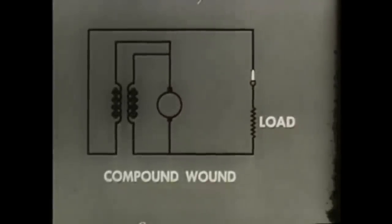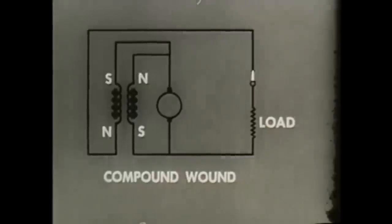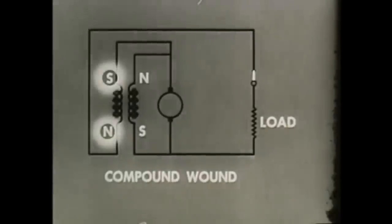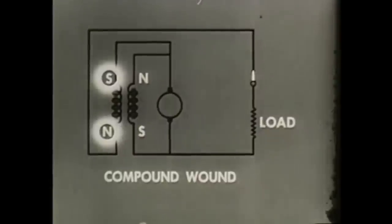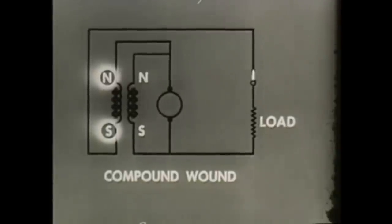By changing the armature winding, a compound-wound generator results, which combines the best features of both types, the series and the shunt-wound generator. When windings are arranged so that magnetic fields oppose each other, it becomes in effect a series generator. This is used only where constant current is the prime requirement, such as in arc welding. By changing the magnetic polarity of one of the fields, the field windings aid one another. As a result, this compound-wound generator has good voltage and fair current regulation.